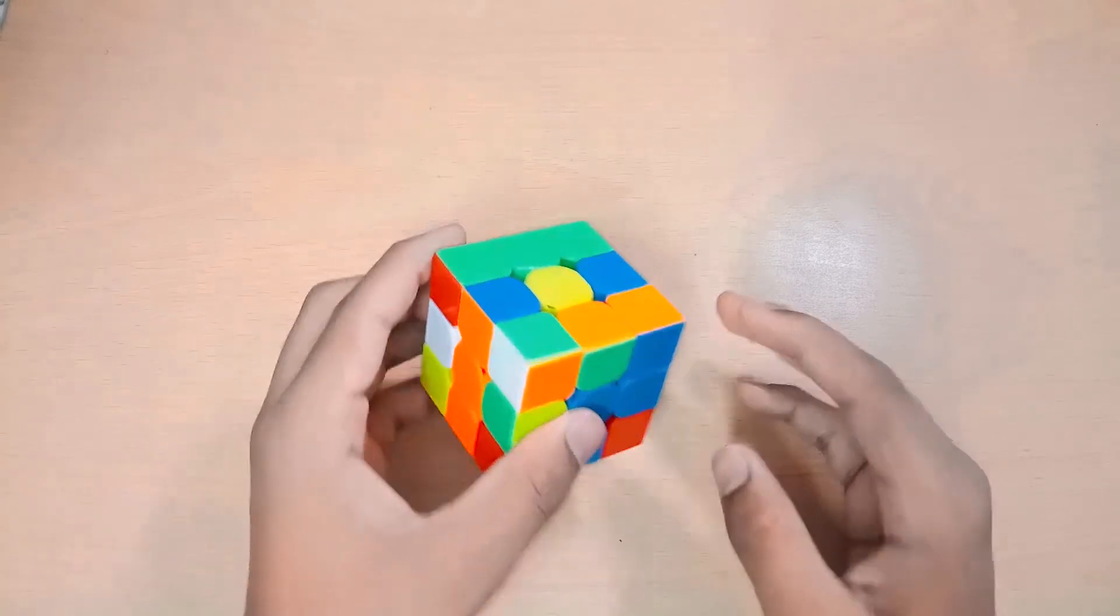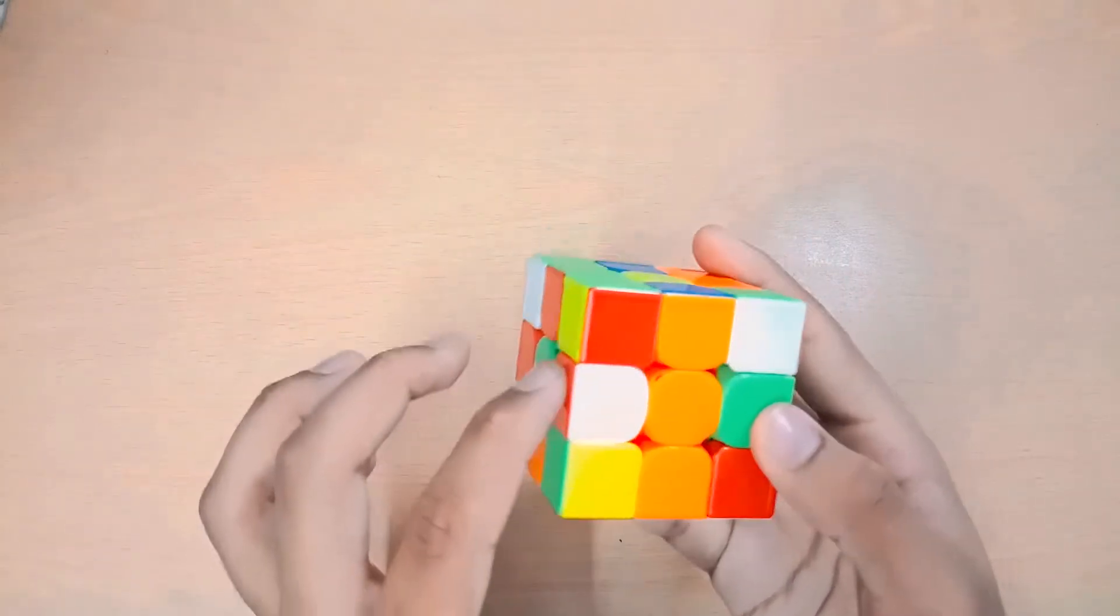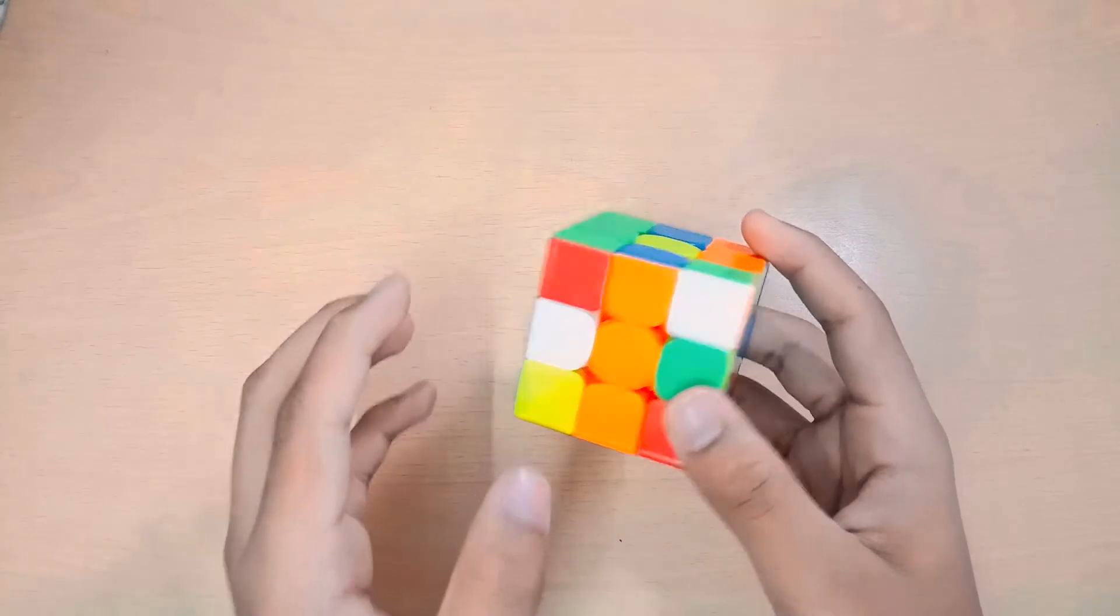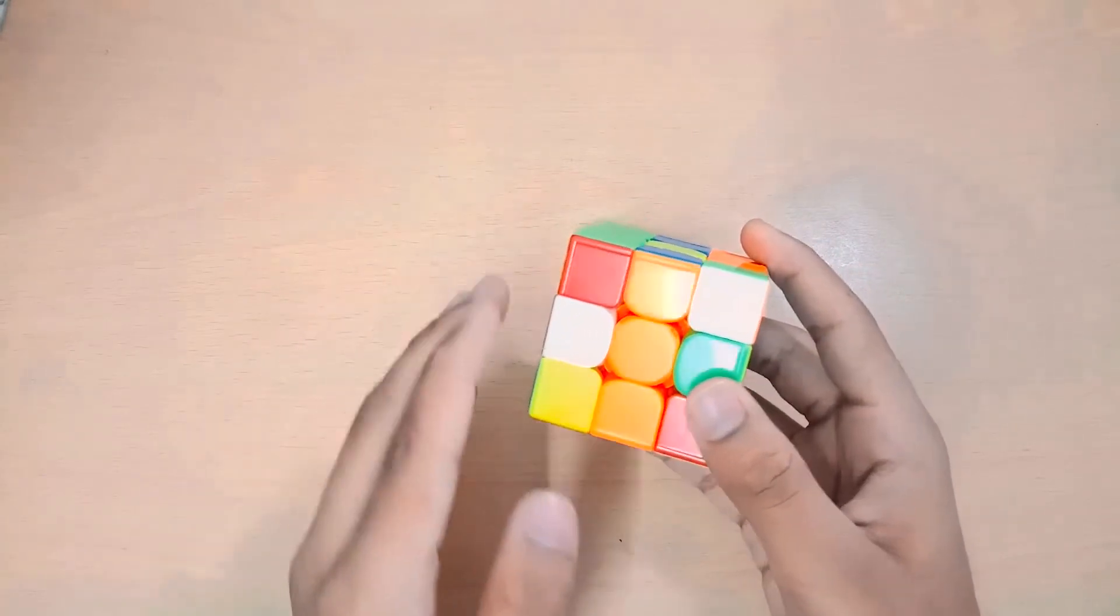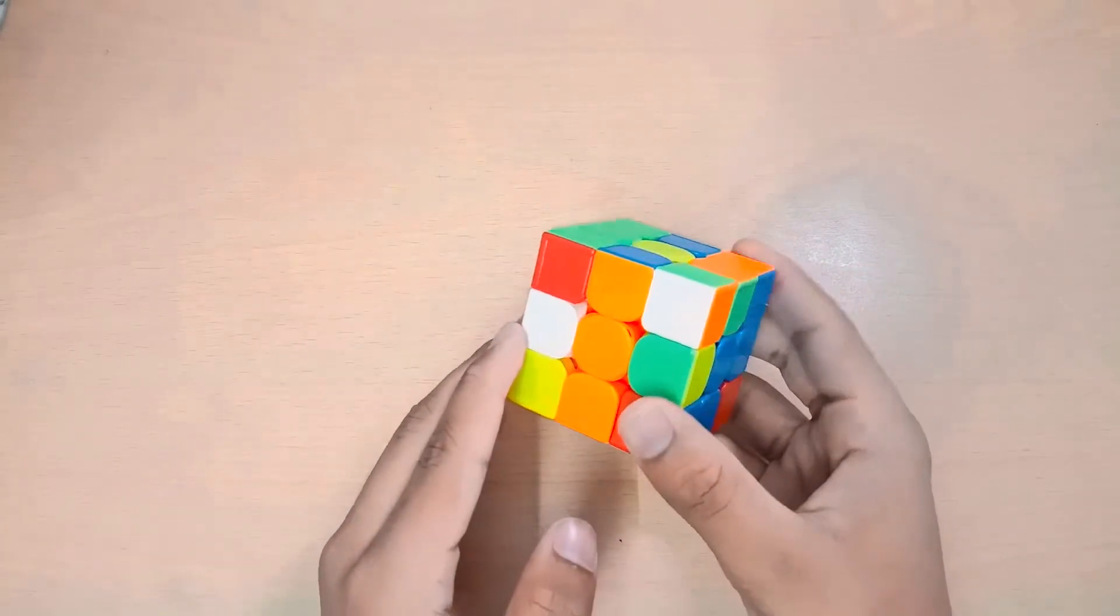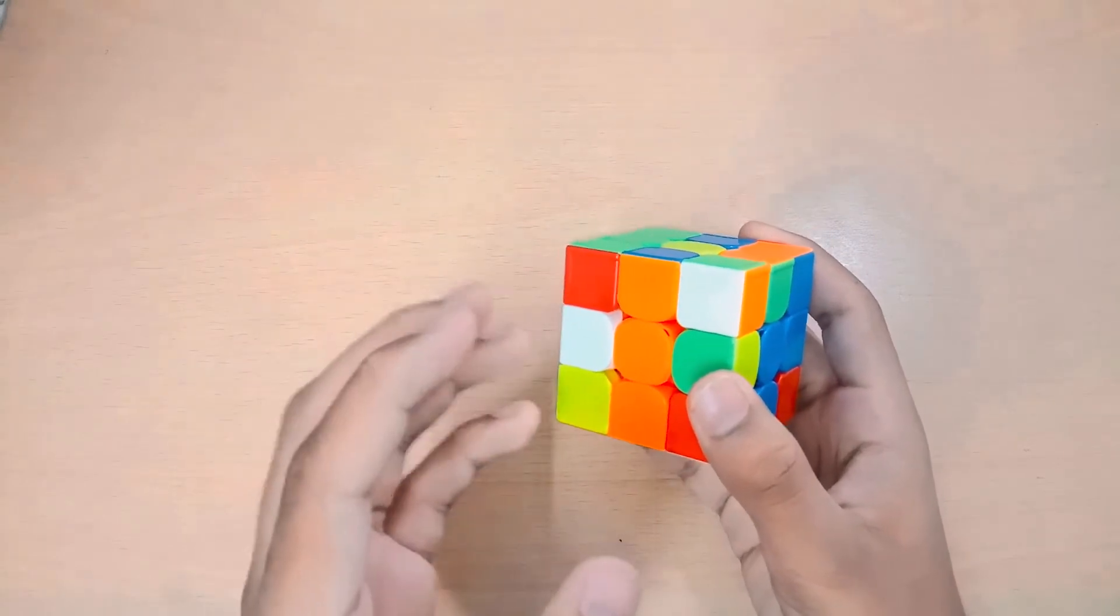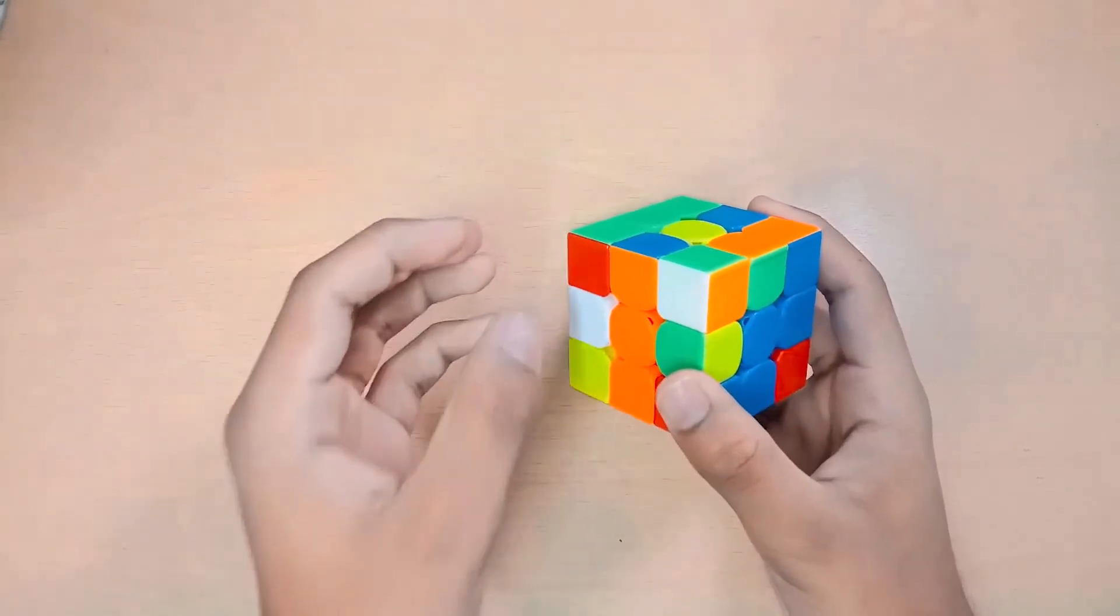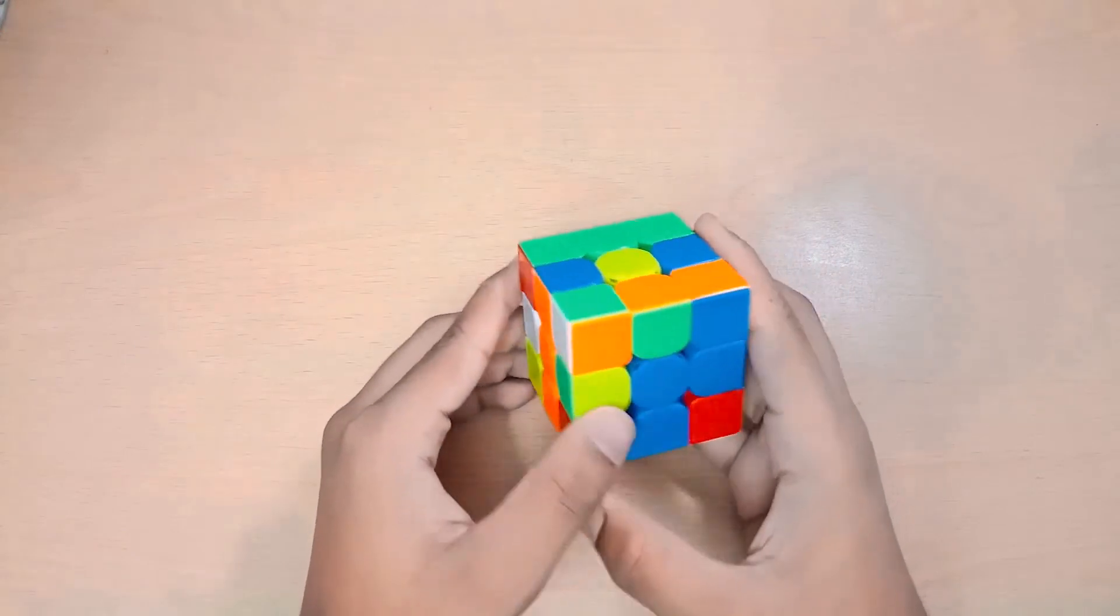For example, even though you knew that your pair, this pair, is gonna end up over here, you still tend to look at this place after solving the cross, feeling that you actually don't know where this pair was gonna end up, and that eats up a lot of time which you don't want.